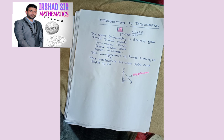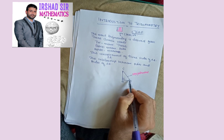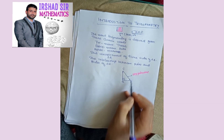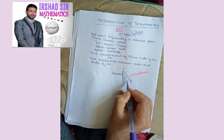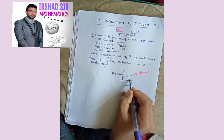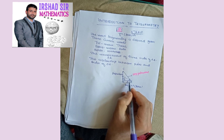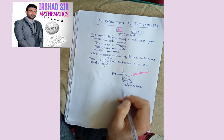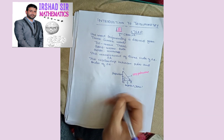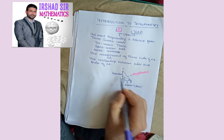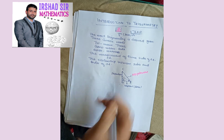We have two acute angles: angle A and angle C. If we take acute angle A, then the side opposite to this acute angle is the perpendicular, and the side adjacent to this acute angle is known as the base. The hypotenuse is already decided. If we take acute angle A, then we have perpendicular BC, base AB, and hypotenuse AC.